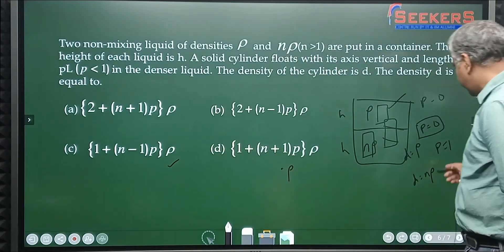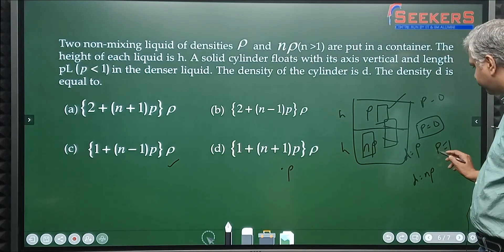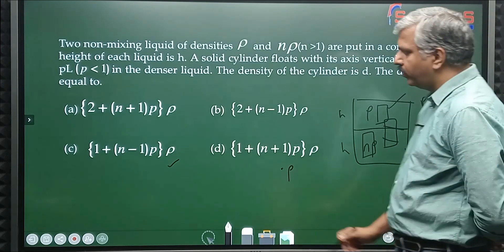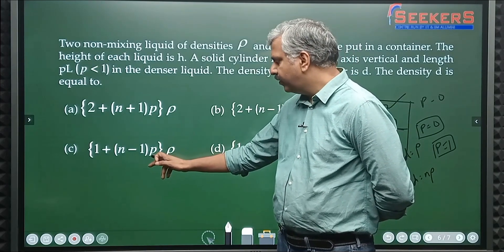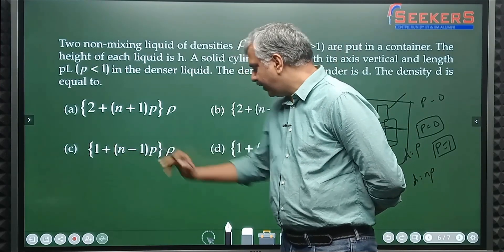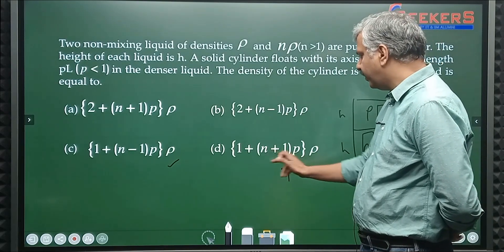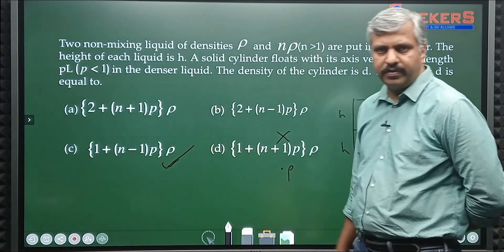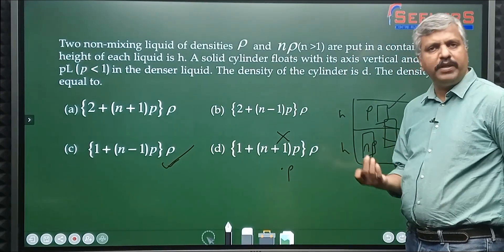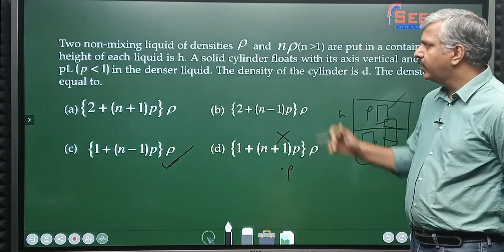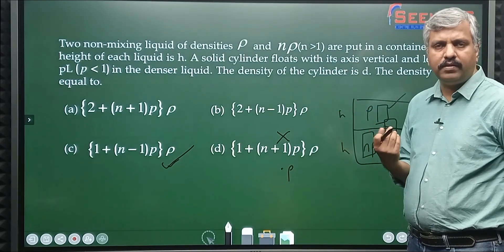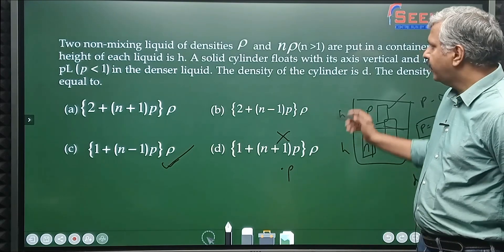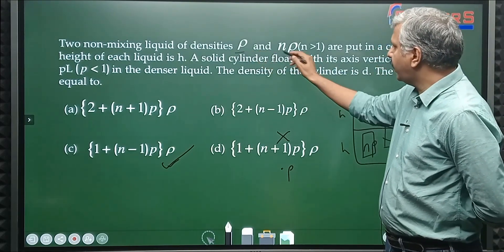Next what I will do is put p equals 1. If I put p equals 1, my answer should be nρ. If I put p equals 1 here, these two will get cancelled, I will get nρ. If I put p equals 1 here, I will get 3ρ. So this can't be the answer, only this is the option. So when you read the question, you may not know how to solve, but if you think a little, you can easily answer.